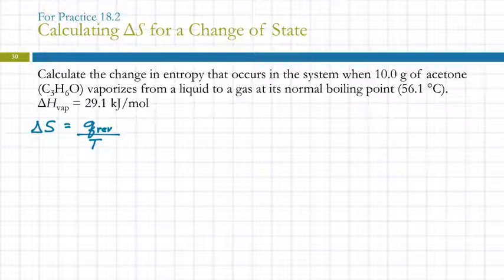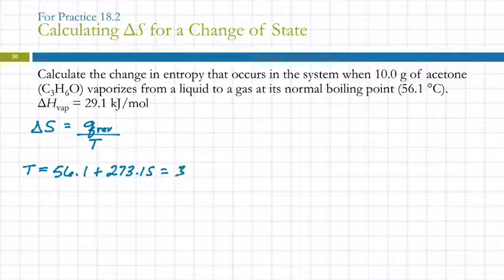What we need is the amount of energy that's being transferred and the temperature. We've got the temperature in Celsius, so we can convert that to Kelvin. 56.1 plus 273.15, which is 329.25 Kelvin.